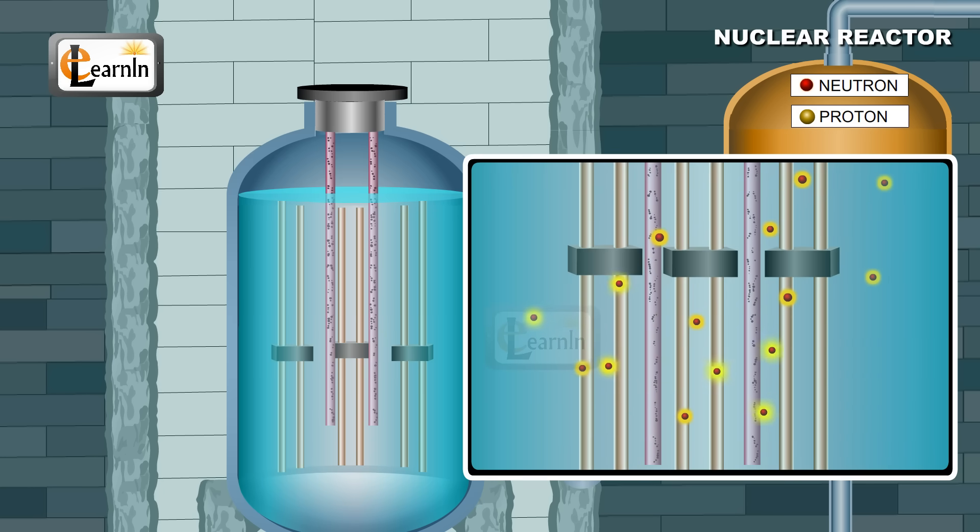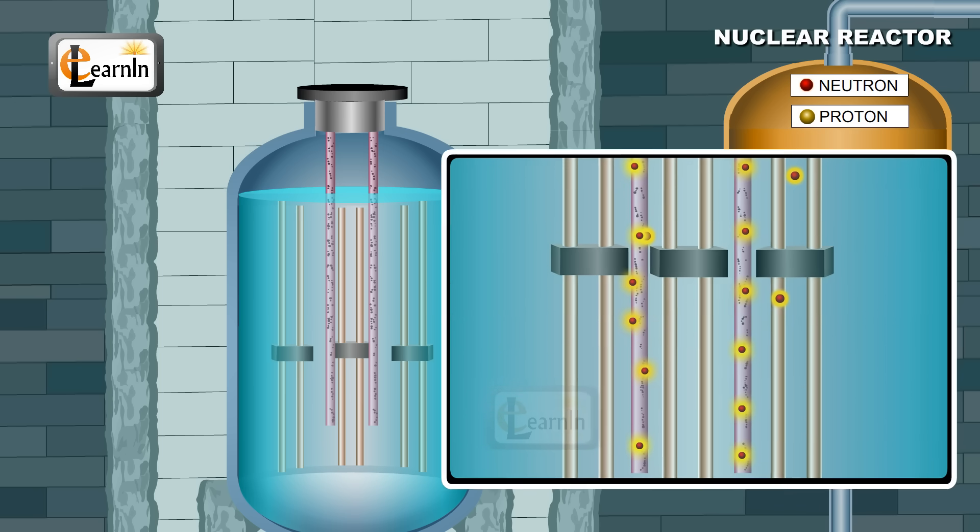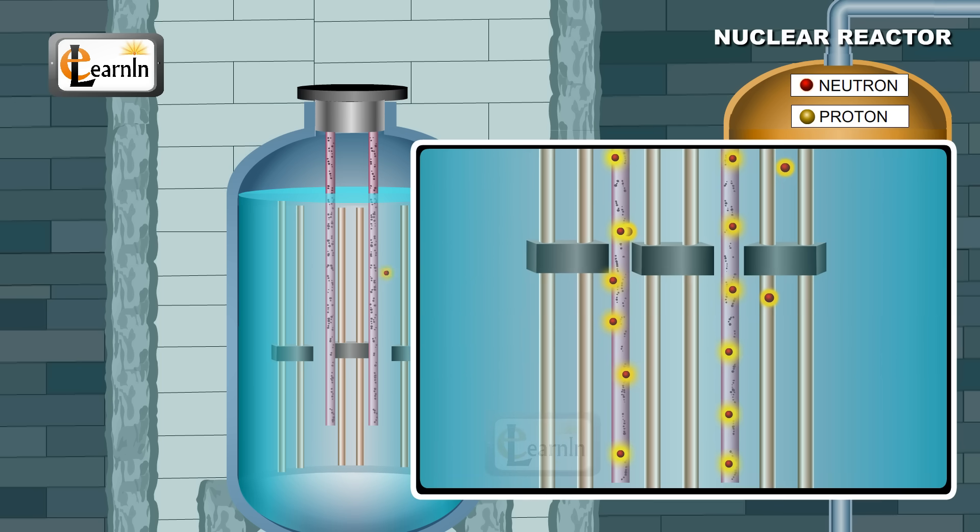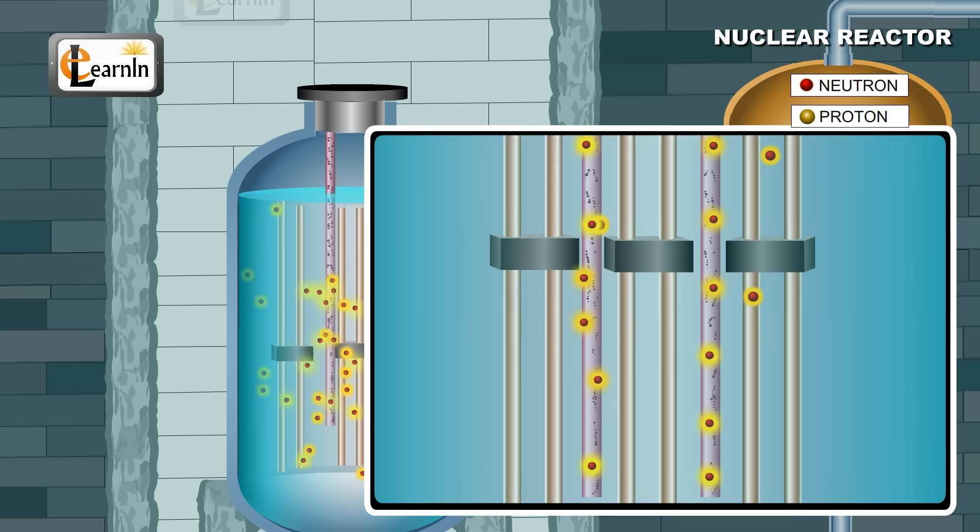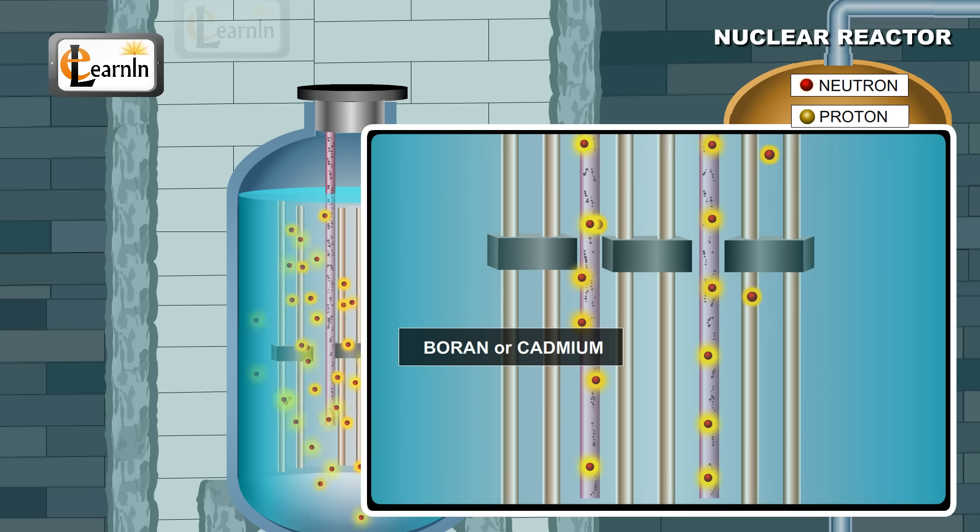The main function of the control rods is to absorb any excess or spare neutron in the moderator in order to prevent any further fission reactions. Usually such control rods are made of boron or cadmium.